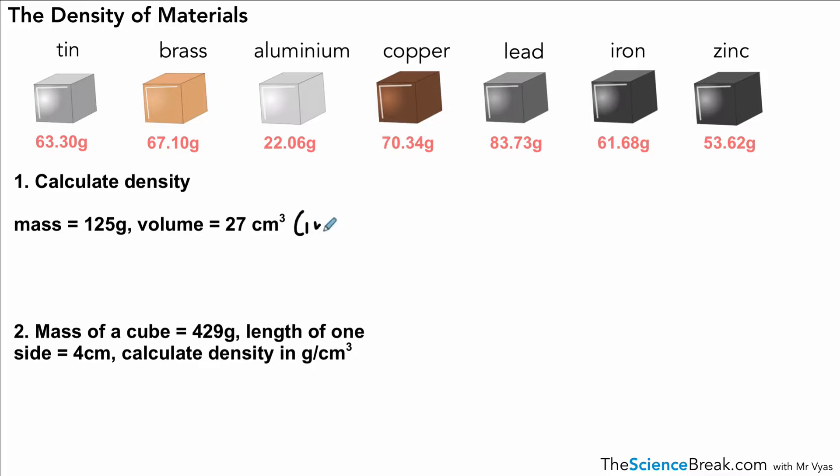For the first one, density is mass over volume. It's quite straightforward. 125 is the mass, 27 is the volume. That gives us an answer of 4.62 grams per centimeters cubed. So that's quite a straightforward one.